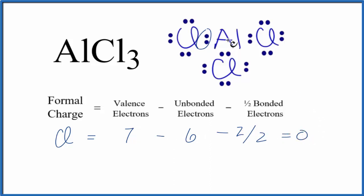that equals 0. So the formal charge on chlorine is 0. Since all the chlorines here are identical, we can put a formal charge of 0 on those as well.